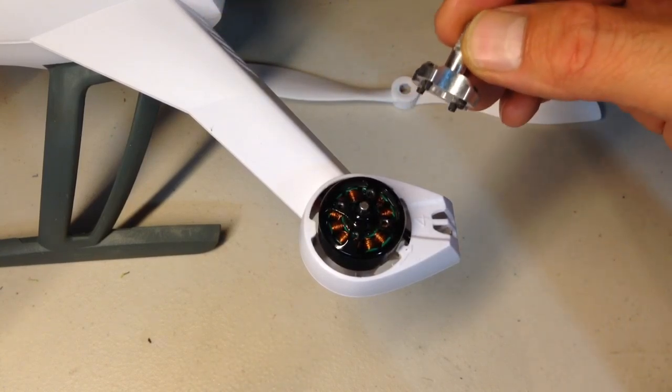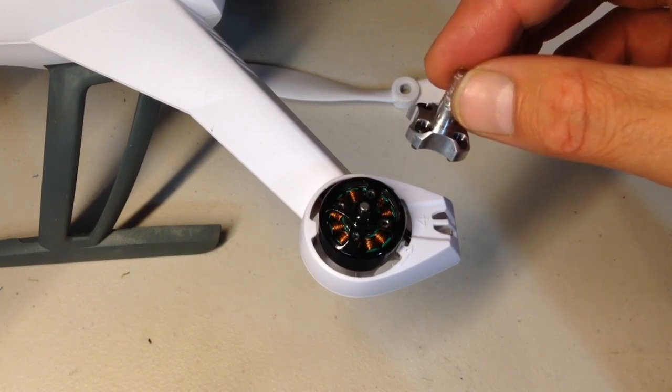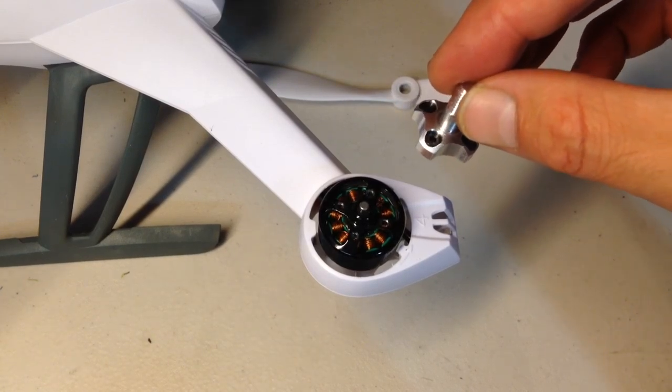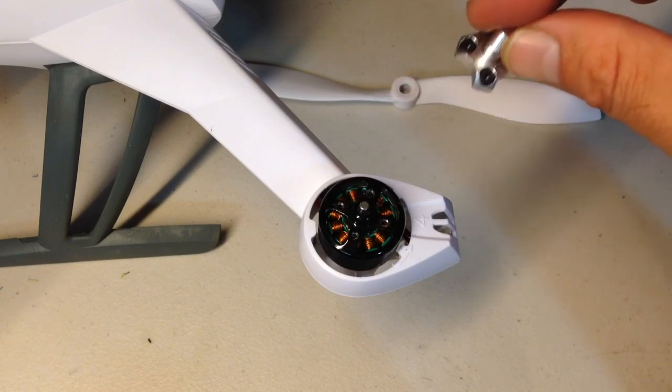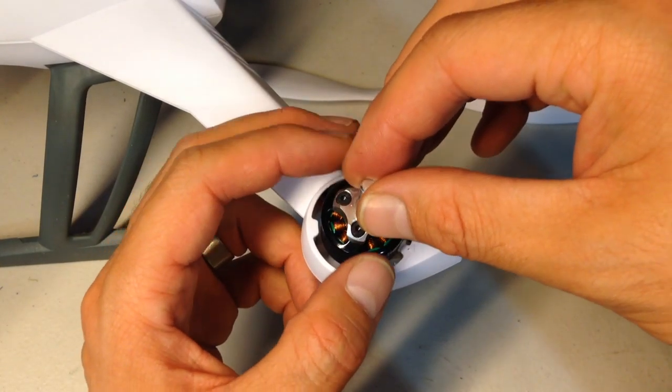So what I do recommend is putting a little bit of blue Loctite on the end of each one of these screws. Not too much, just the teeniest amount on the very beginning of the threads. You can just set all four screws into the adapter just like this. And I'm going to go ahead and set it down in.